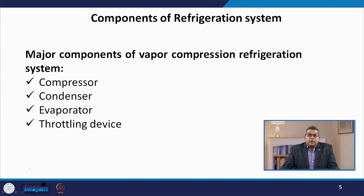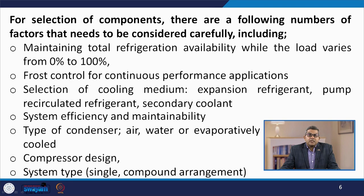When we talk about the major components, refrigeration is governed by different types of cycles, and the vapor compression refrigeration cycle is one of the foremost cycles used. The major components used in the refrigeration system are the compressor, condenser, evaporator, and throttling devices.